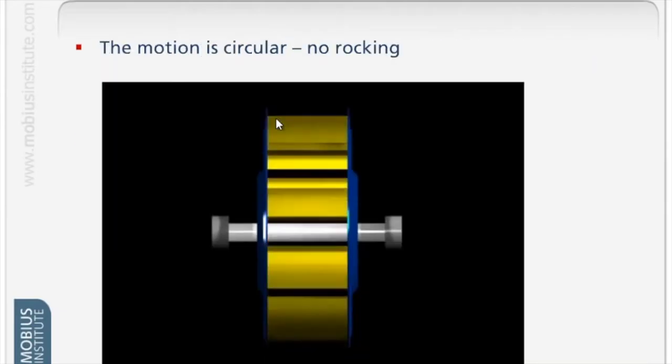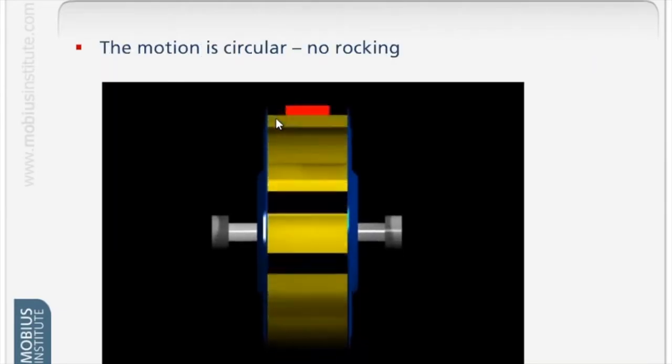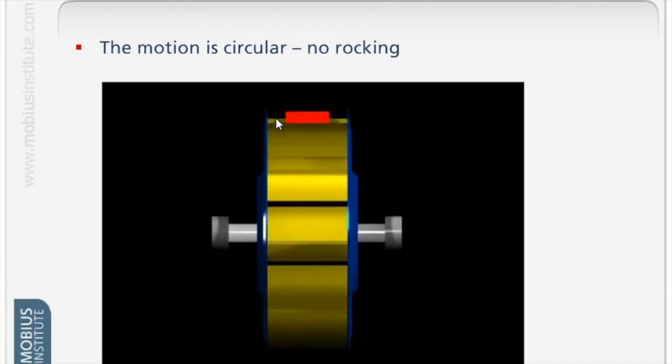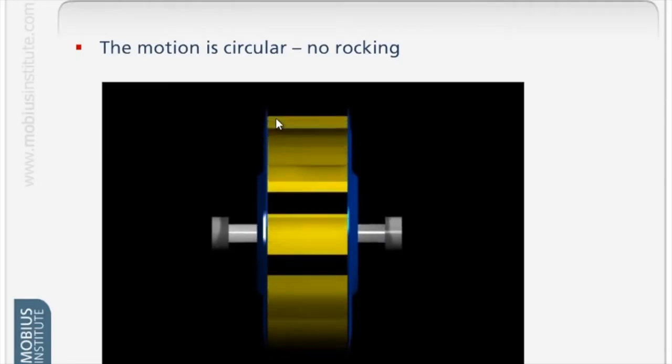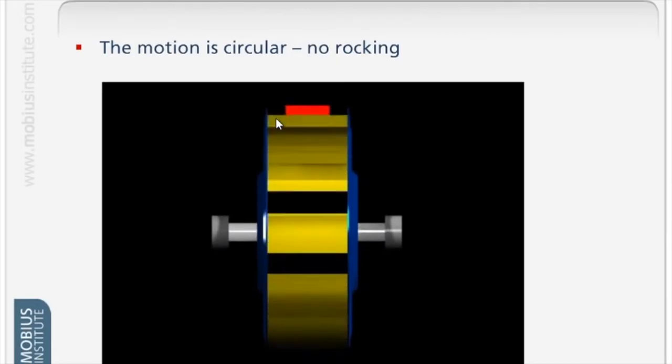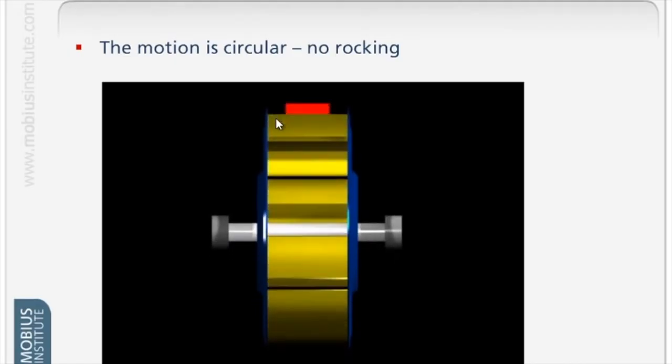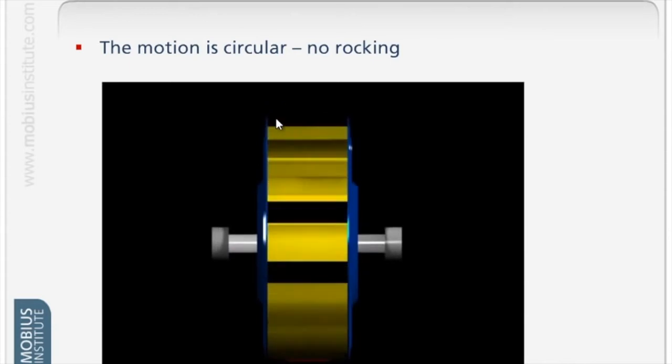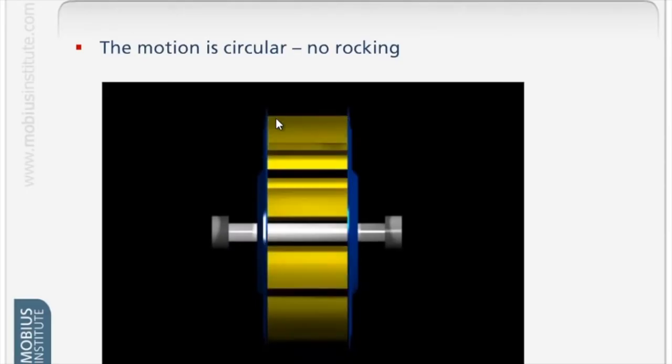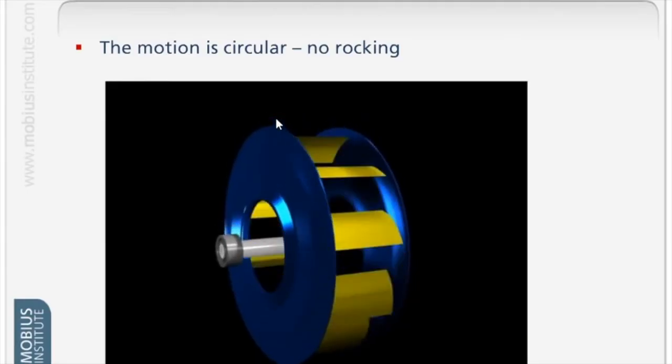Here is what we call single plane unbalance, static unbalance. The fan is very narrow compared to its diameter. All the unbalance is concentrated in one plane. If you imagine a circular motion that we're looking at from the side, the two ends of the rotor, assuming it's supported at both ends, are moving up and down together - they are in phase.